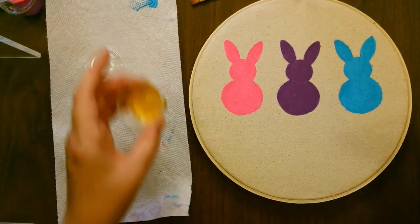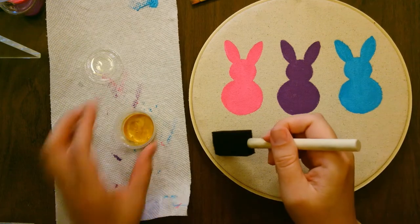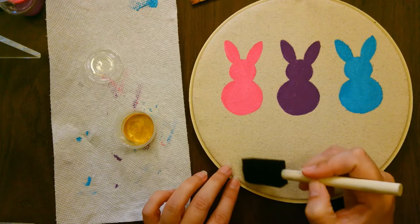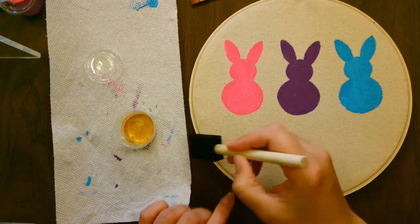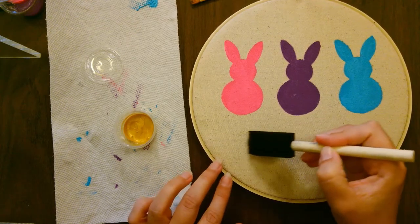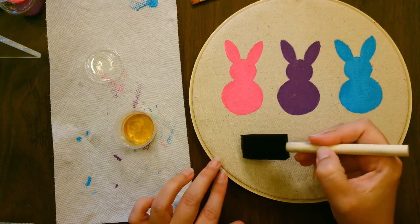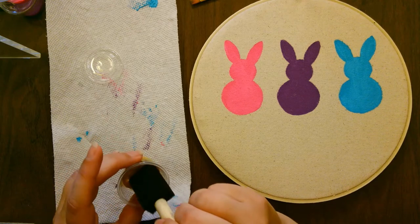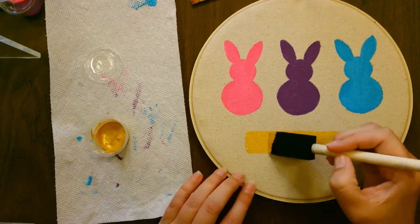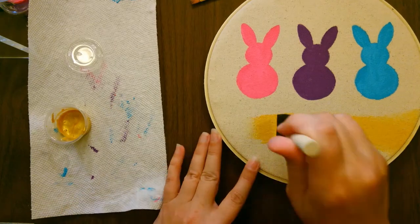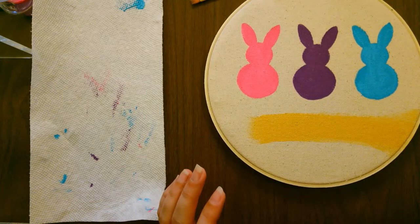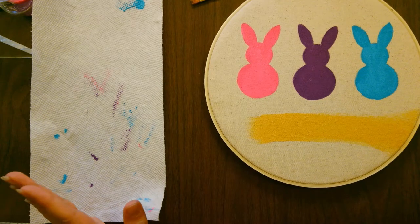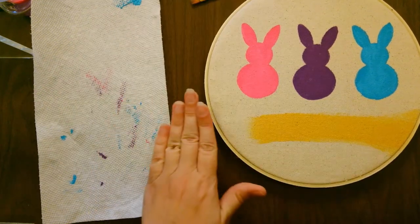Next, you're going to use your gold and your sponge brush to paint a swoop along the bottom. You can make it as thick or as far across as you want. I like to start just under midway under the pink bunny and just swoop across. Now for the drying time, go ahead and wash your brushes, clean up your area. We have to wait for this to dry.